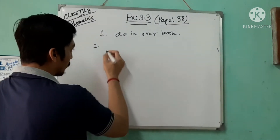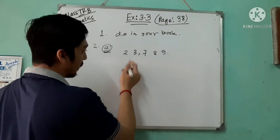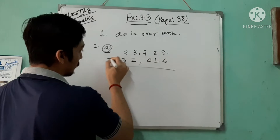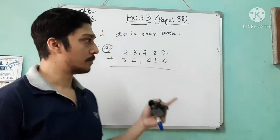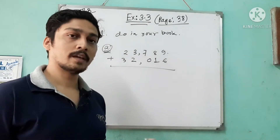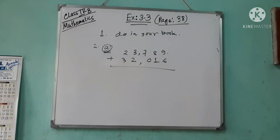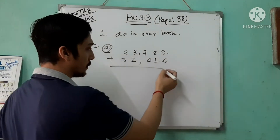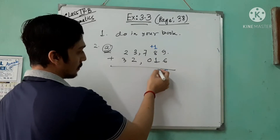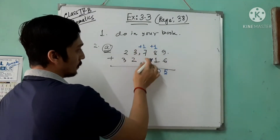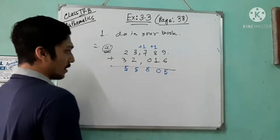I'm doing question 1a. It is given: 23,789 and 32,016. You can do it vertically or horizontally. Nine plus six is fifteen, so you write five and carry one. One plus eight is nine, nine plus one is ten, so write zero and carry one. Zero plus seven is seven, seven plus one is eight. Three plus two is five, and three plus two is five. So the sum is 55,805.